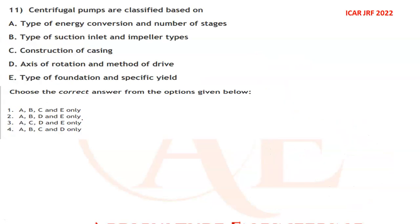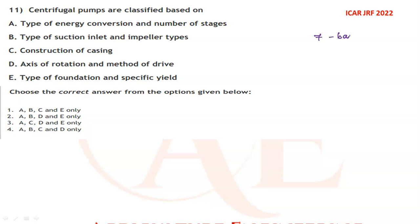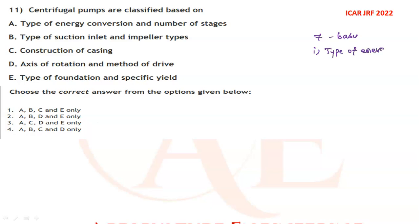Centrifugal pumps are classified based on several criteria. They are primarily classified according to seven bases. The first is the type of energy conversion — two types: volute type and diffuser type. The second is the number of stages: single stage and multi-stage.